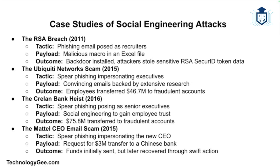Examining real-world case studies provides valuable insights into social engineering tactics. In the 2011 RSA breach, attackers sent phishing emails to RSA employees posing as recruiters and included an Excel file with a malicious macro. Once opened, the macro installed a backdoor allowing attackers to steal sensitive information, including data related to RSA's SecurID two-factor authentication tokens. In 2015, the Ubiquiti Networks scam involved cybercriminals using spear phishing to impersonate Ubiquiti executives, tricking employees into transferring $46.7 million to fraudulent overseas accounts.